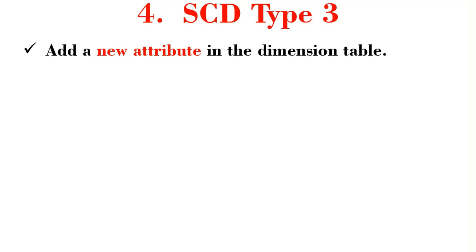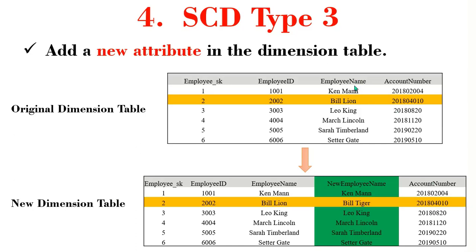You also need to go through management in order to be adding columns each time a dimension attribute value changes. For example, when Bill Lyon decides to change his name, we introduce a new column and capture the new name, Bill Tiger, there. The initial column still exists, and new columns are added as attributes change.